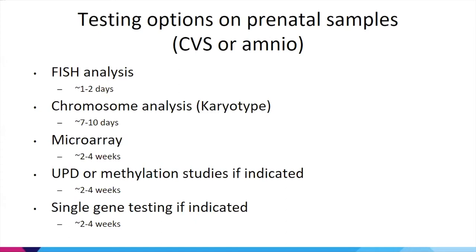Regardless of which diagnostic procedure is performed, mosaicism present at very low levels or not in the sampled cell type may not be identified. Normal results are risk-reducing but not risk-eliminating, and families need to be aware of that. These techniques are considered highly accurate — if we see something, we generally believe it's a diagnosis; if we don't, the expectation is it's hopefully not present — but mosaicism adds murkiness because we cannot test every cell type.